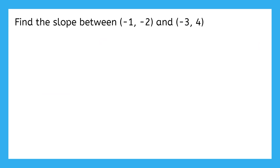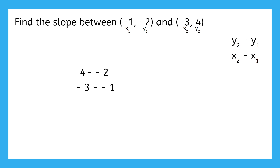Let's do a few more examples, starting with this one. Here's the slope formula again in case you need it. First, let's label the coordinates so we know which ones to plug in where. The x of the first point is x1, and the y of the first point is y1. The x of the second point is x2, and the y of the second point is y2. Plug them into the formula — be careful with your calculations here, negatives can be tricky. When you subtract a negative, it's the same as adding a positive. So that's really 4 plus 2, which is 6. On the bottom, negative 3 minus negative 1 is the same as negative 3 plus 1, so that's negative 2. And then 6 divided by negative 2 is negative 3. So the slope of this line would be negative 3.